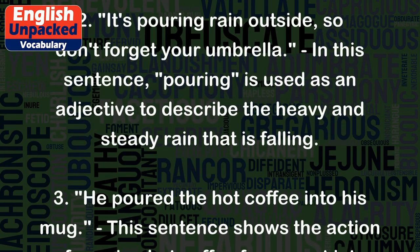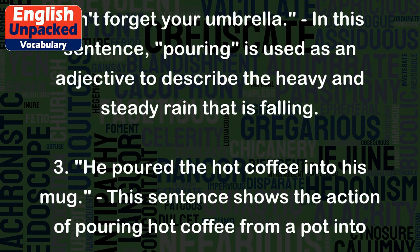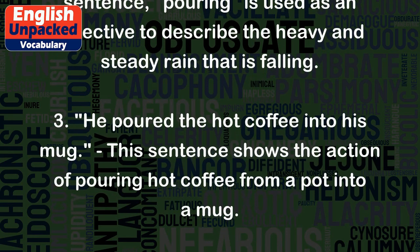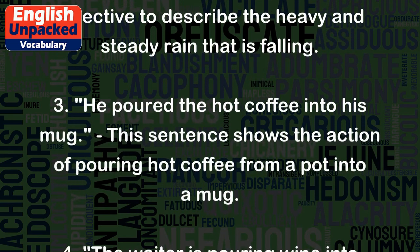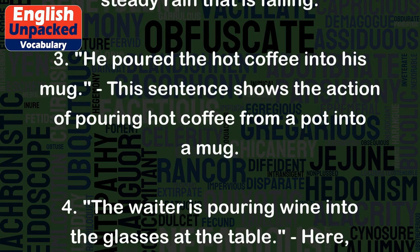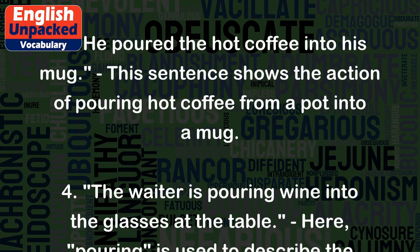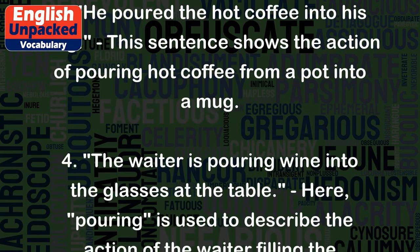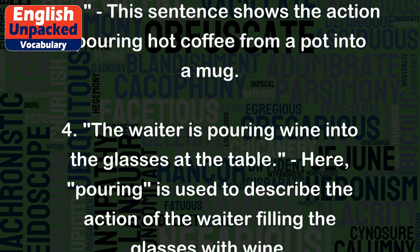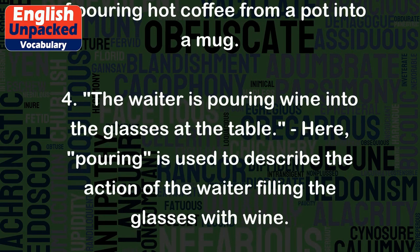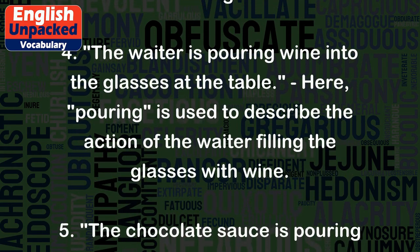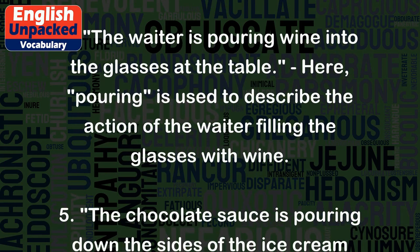Three: He poured the hot coffee into his mug. This sentence shows the action of pouring hot coffee from a pot into a mug. Four: The waiter is pouring wine into the glasses at the table. Here, 'pouring' is used to describe the action of the waiter filling the glasses with wine.